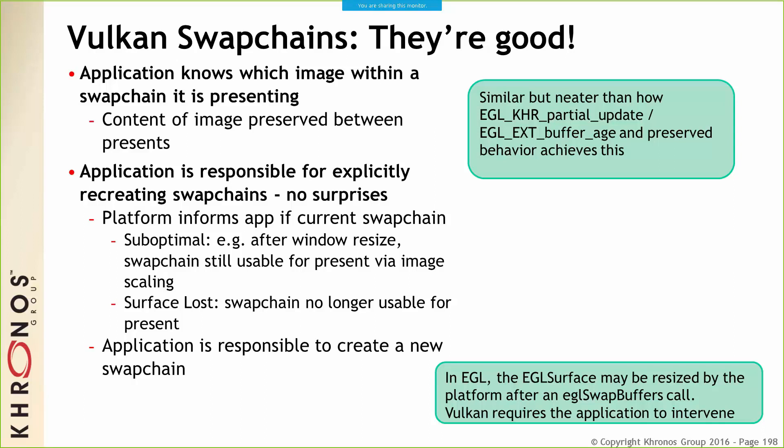This is different from how EGL does things. With EGL, the platform — after you call swap buffers — can say, 'Oh by the way, your surface has changed size,' after the fact. In Vulkan, you'll be notified when that happens, but you need to recreate the swap chain if there's a resize. It doesn't just happen magically, which avoids some painful orientation change and resize behavior.